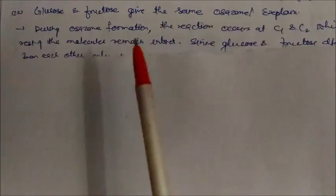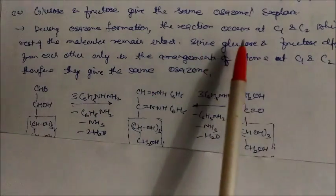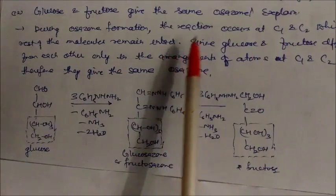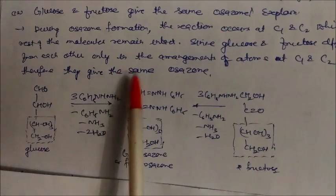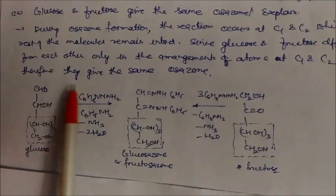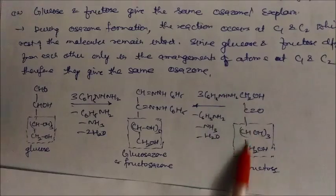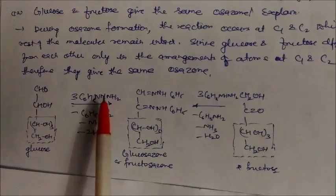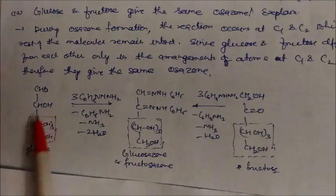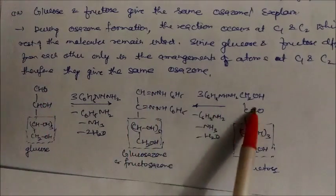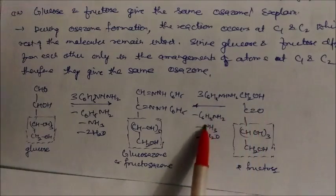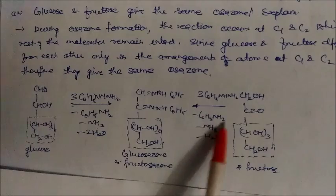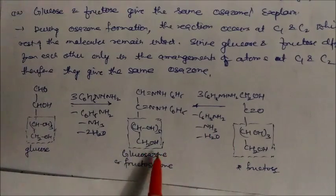Glucose and fructose give the same osazone — why? During osazone formation, the reaction occurs at C1 and C2 carbons, while the rest of the molecule remains intact. Since glucose and fructose differ from each other only in the arrangement at C1 and C2, they both react with phenylhydrazine (C₆H₅NHNH₂) to give the same osazone. Both glucosazone and fructosazone are identical, with release of aniline, ammonia, and water.